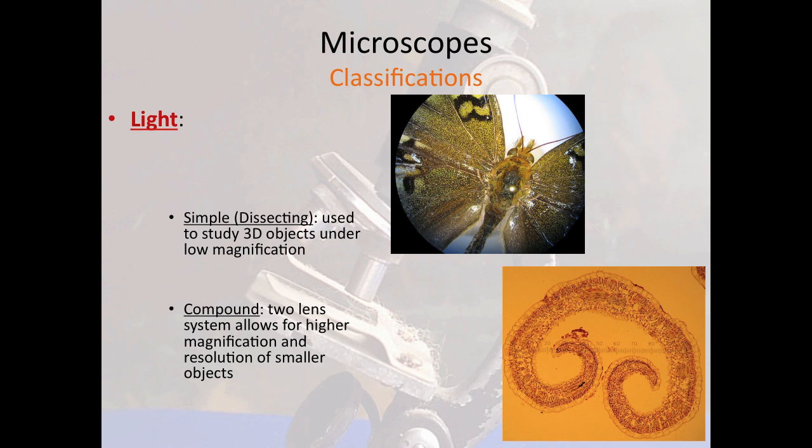The second thing to know about microscopes is that we can broadly classify them into two types. Light microscopes use lenses to focus and magnify light rays. A simple dissecting scope is really fun — it's used to study macroscopic objects that we can see with our naked eye in 3D. You can take an insect, feathers, or a leaf and look at it under high power and they start to look really cool. A compound microscope takes two lenses, combines the view, and gives us higher magnification and resolution of much smaller objects than we get with a dissecting microscope.